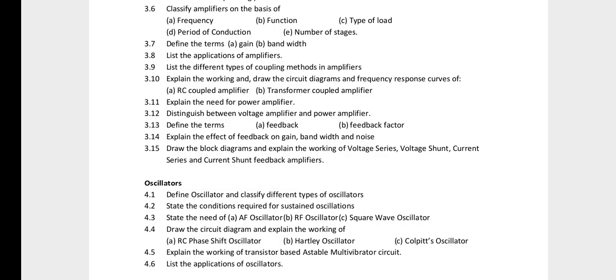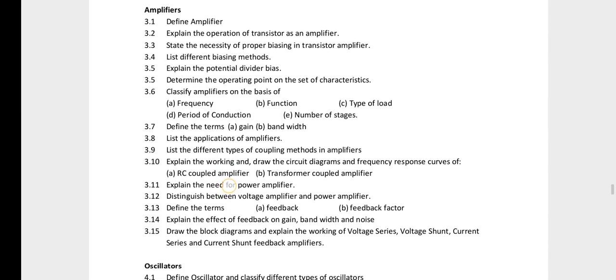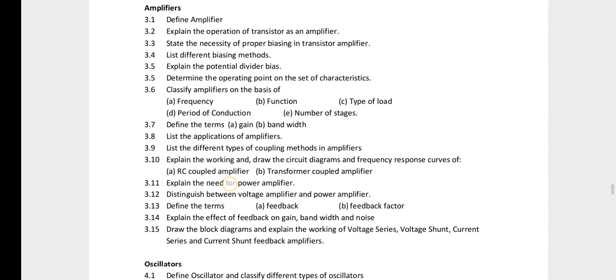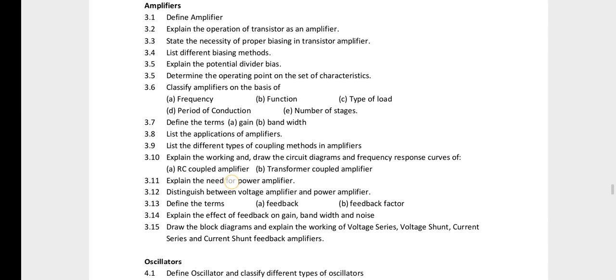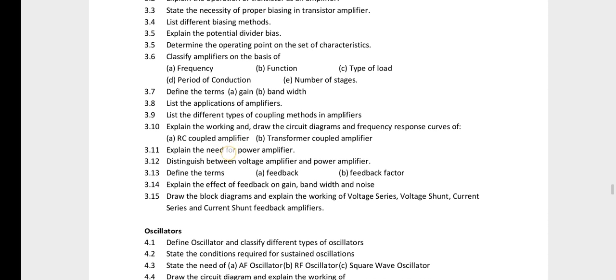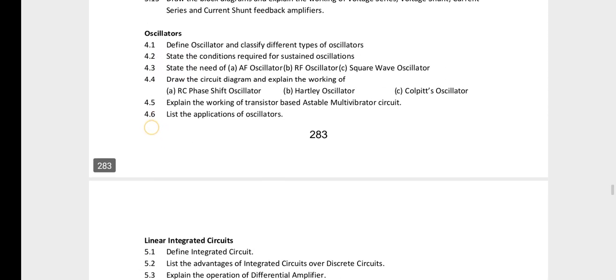Later, the block diagram is question 3.15. Then, explain the potential divider bias and the transistor as an amplifier. There are three prioritized questions for this chapter.